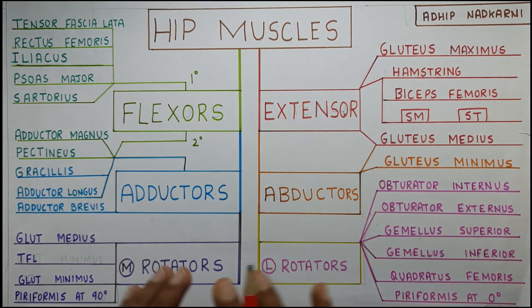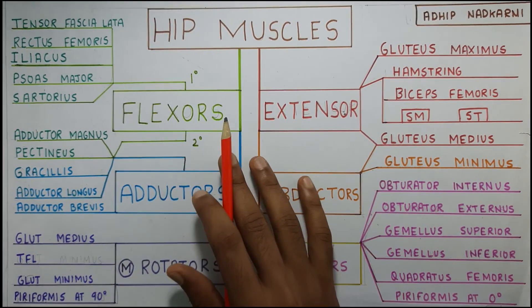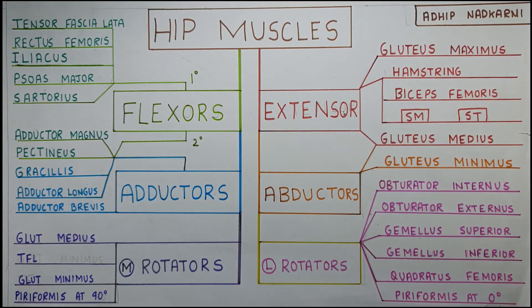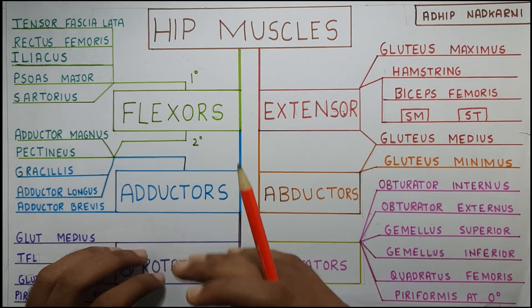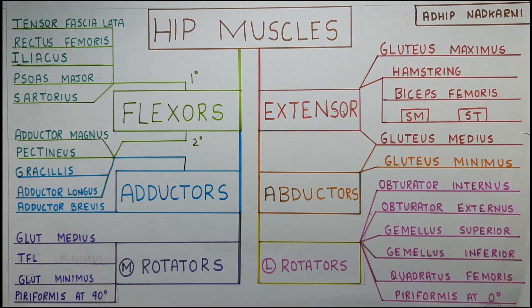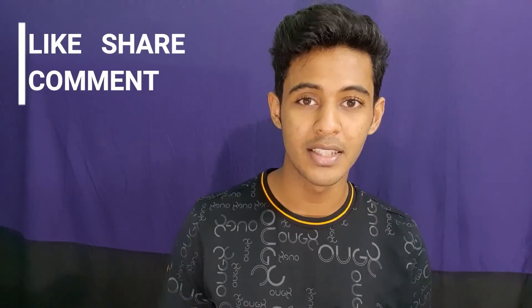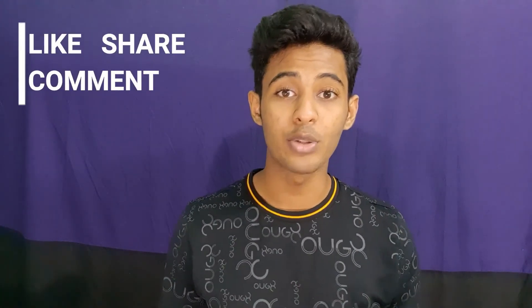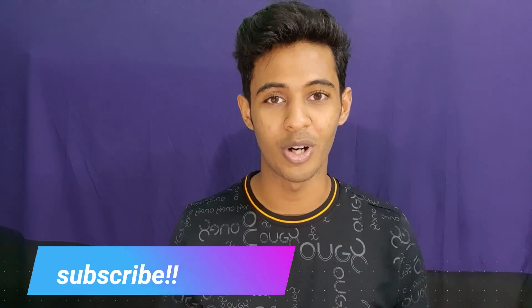This was a general overview of the muscles around the hip joint. In the next video we will be focusing on the flexors, and also maybe the adductors depending on how long the video goes. That's all for today, guys. If you like my content please share it with your friends, don't forget to hit that subscribe button, and please like the video as it really helps me out. Let me know in the comments what other videos you'd like me to cover. See you soon in the next video.